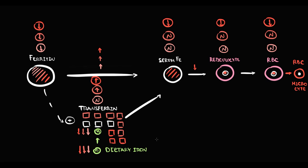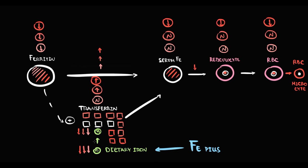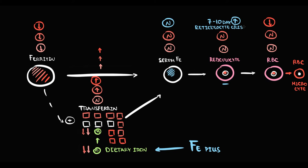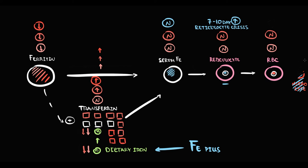Interestingly, with treatment the entire process works in completely reverse direction. After iron intake, the first value that normalizes is serum iron, because this is the iron used for hemoglobin production. With normalization of serum iron, red blood cell production is restored. The first cells to increase are reticulocytes — the maximal increase in reticulocyte count usually occurs on day 7 to 10 of treatment, which we call the reticulocyte crisis. If the reticulocyte crisis develops, this means treatment is working.